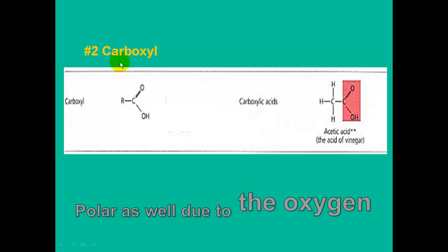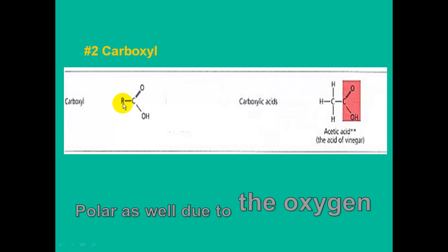Functional group number two is the carboxyl group — 'carbo' meaning carbon and oxygen. It consists of a carbon double-bonded to an oxygen, plus a hydroxyl (-OH) group attached, giving carbon its four bonds. It belongs to the group called carboxylic acids; an example is acetic acid, which is vinegar. Due to the oxygens and unequal electron sharing, these molecules are also polar.